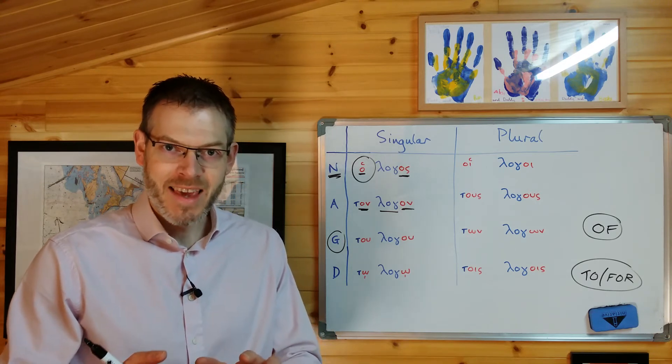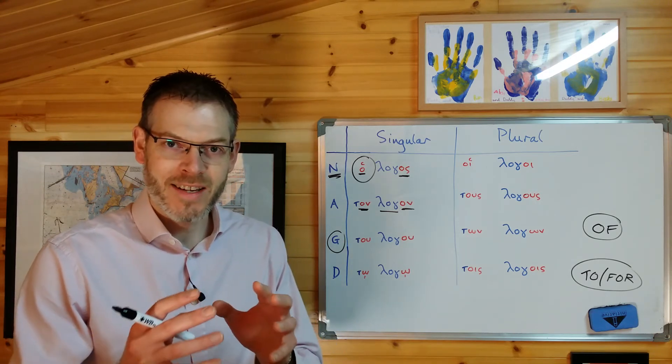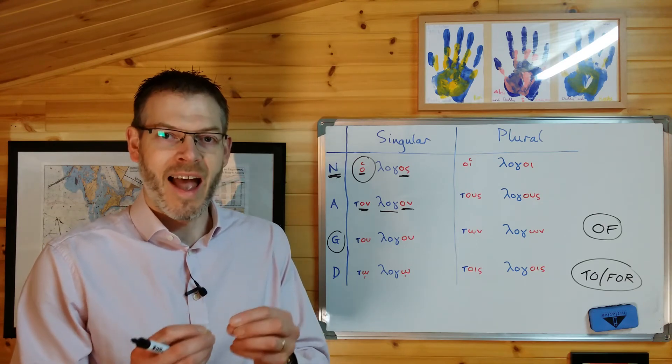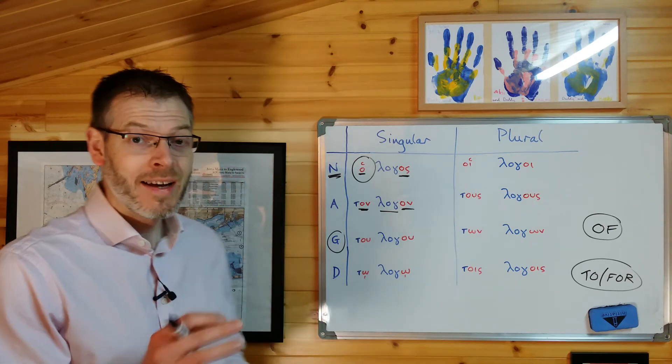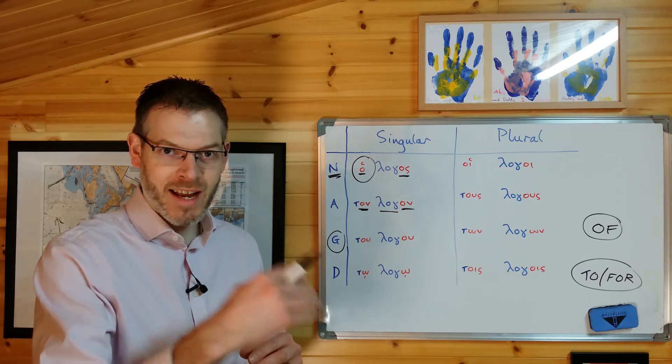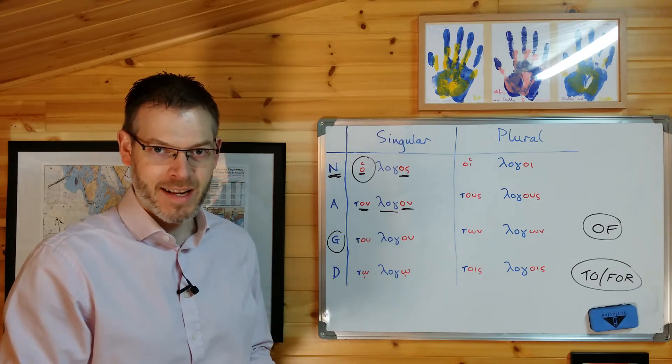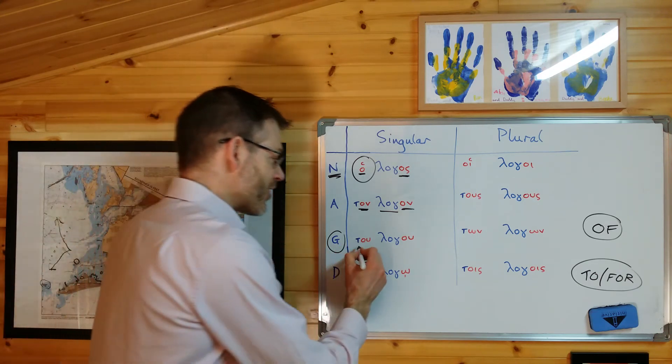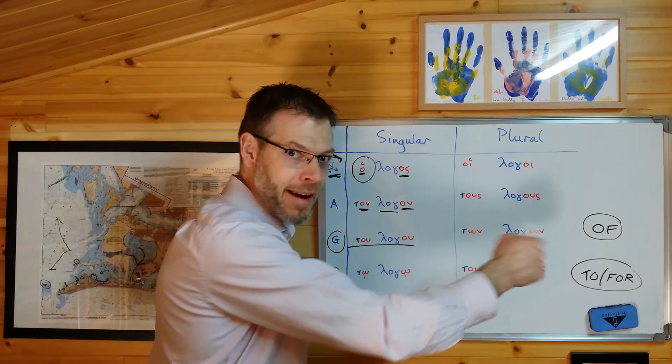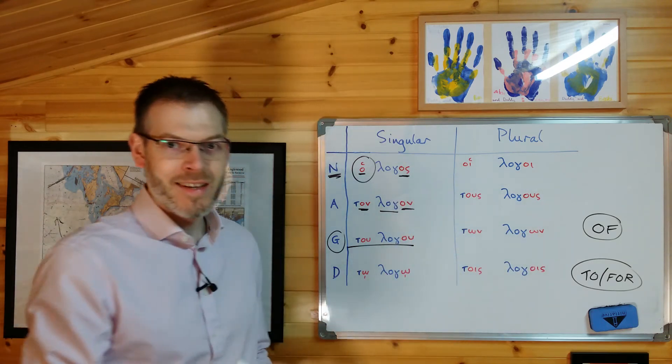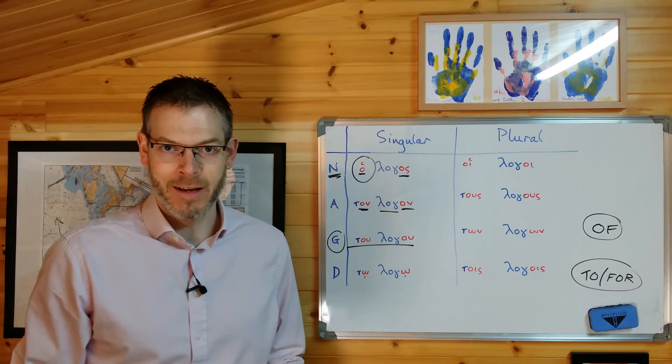That's the key to getting a sense of the meaning of the genitive and dative cases. Remember, a case is like a little label which attaches to a word telling you what it's doing in the sentence, and if it's a genitive case, it means of that thing. If it's the dative case, it means to or for that thing.